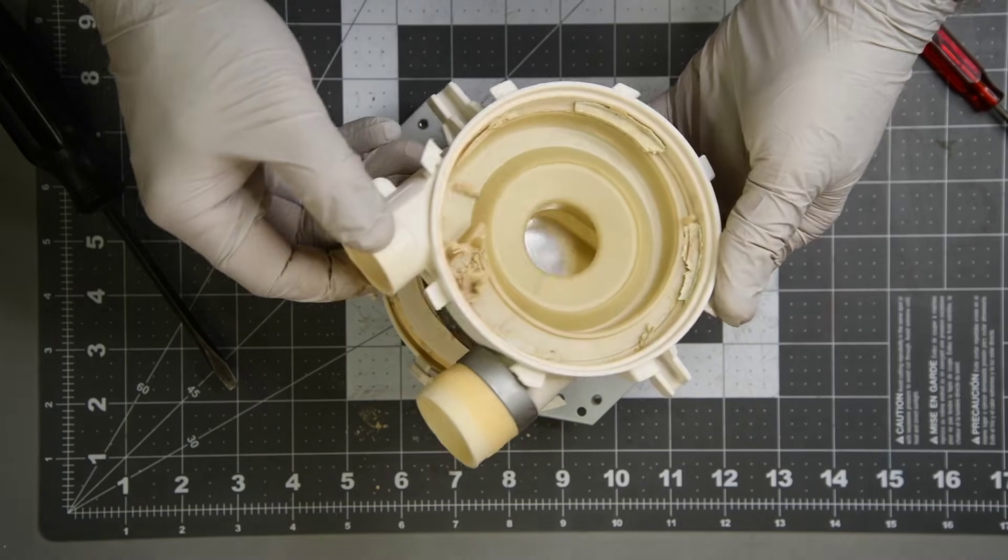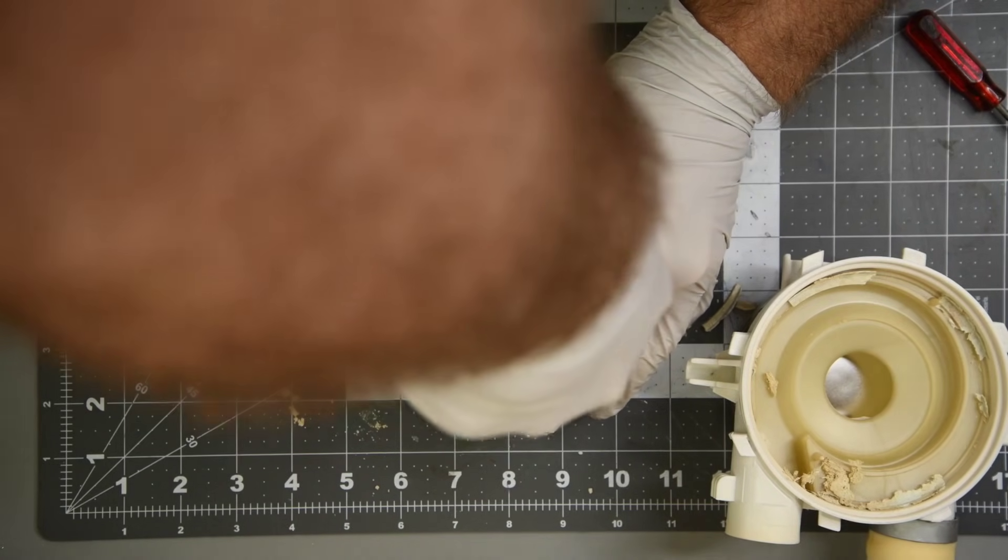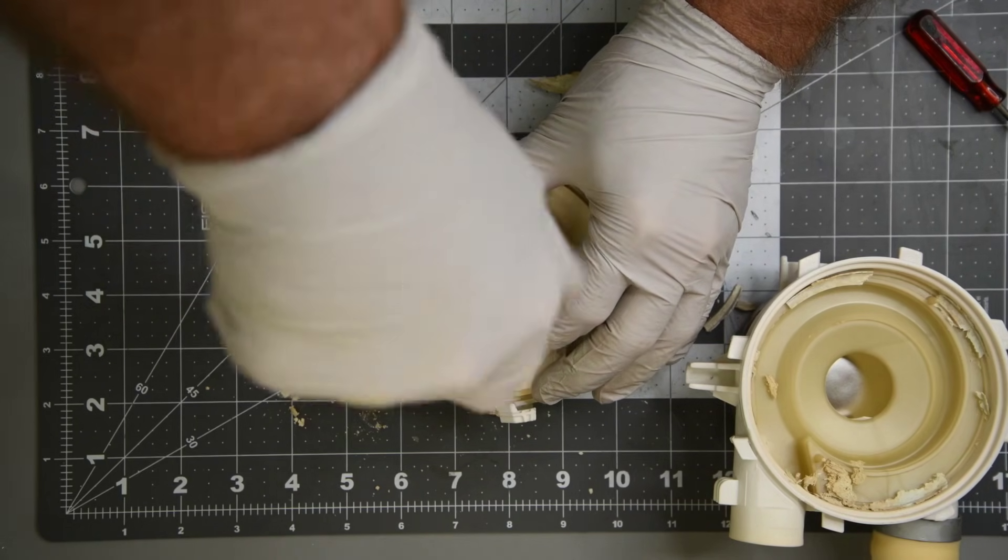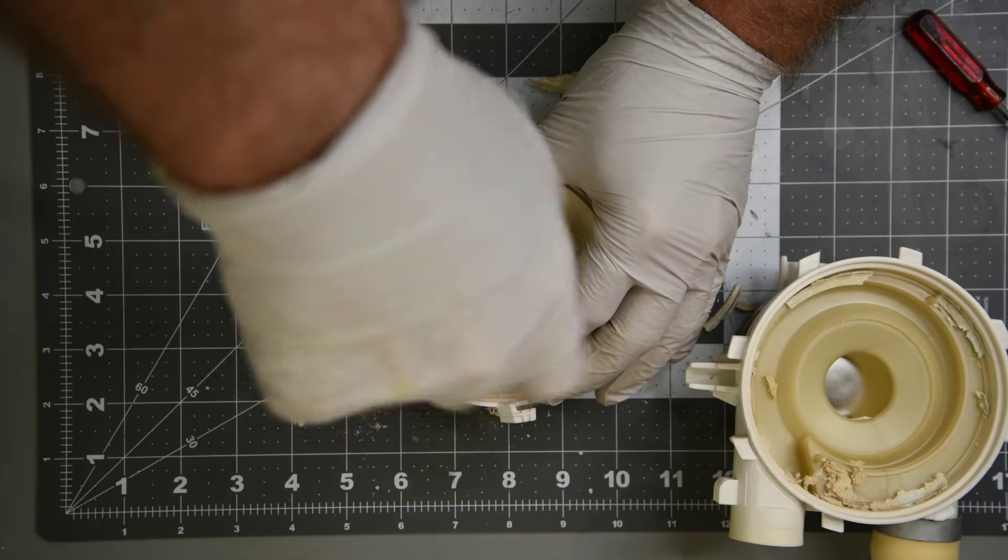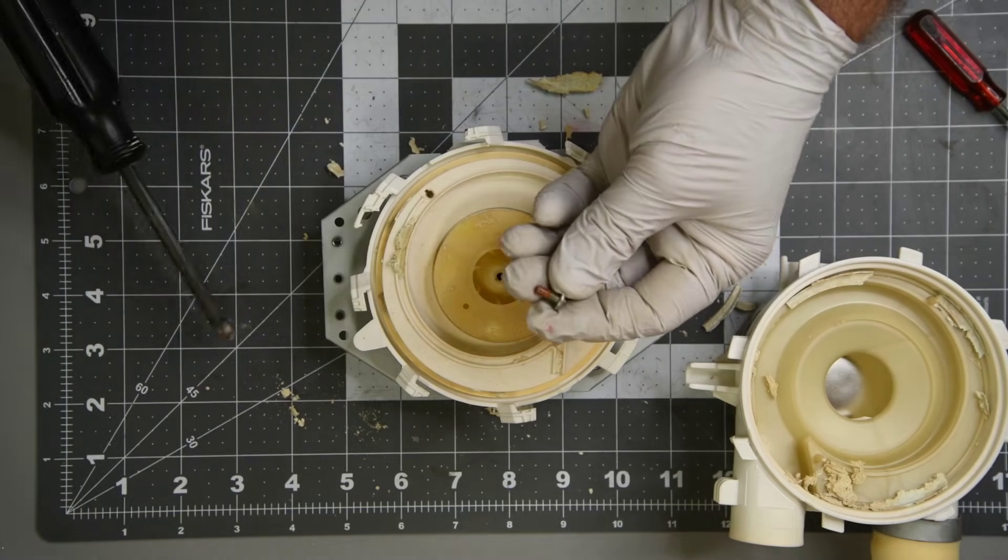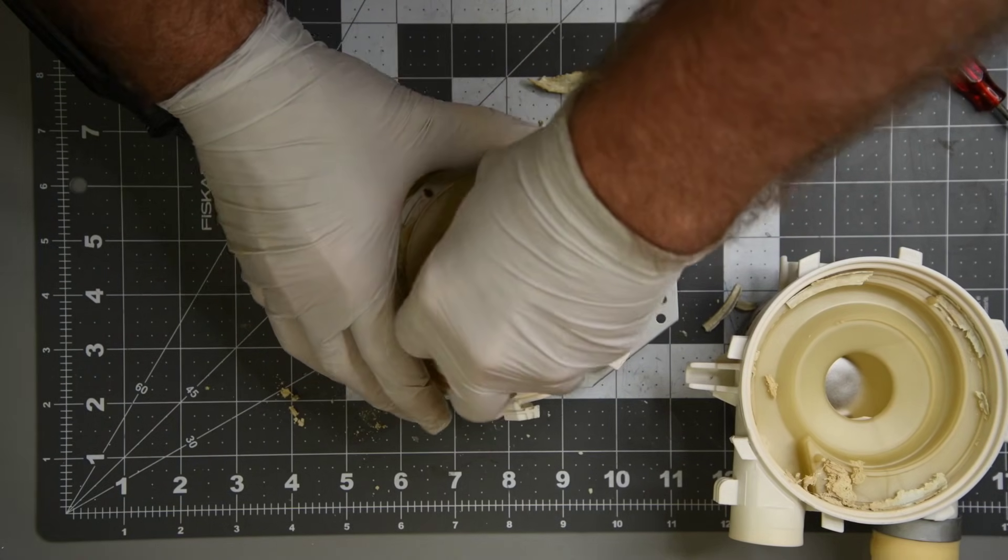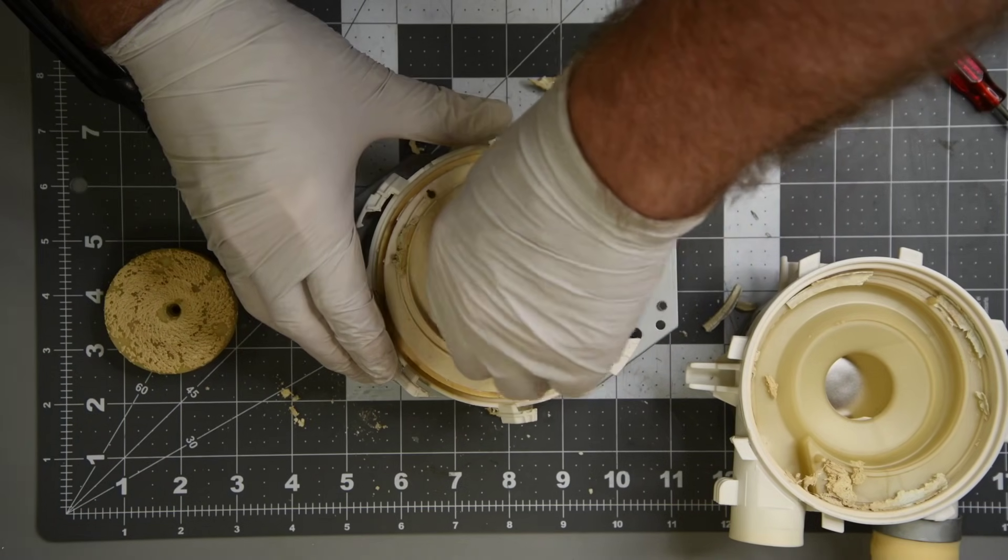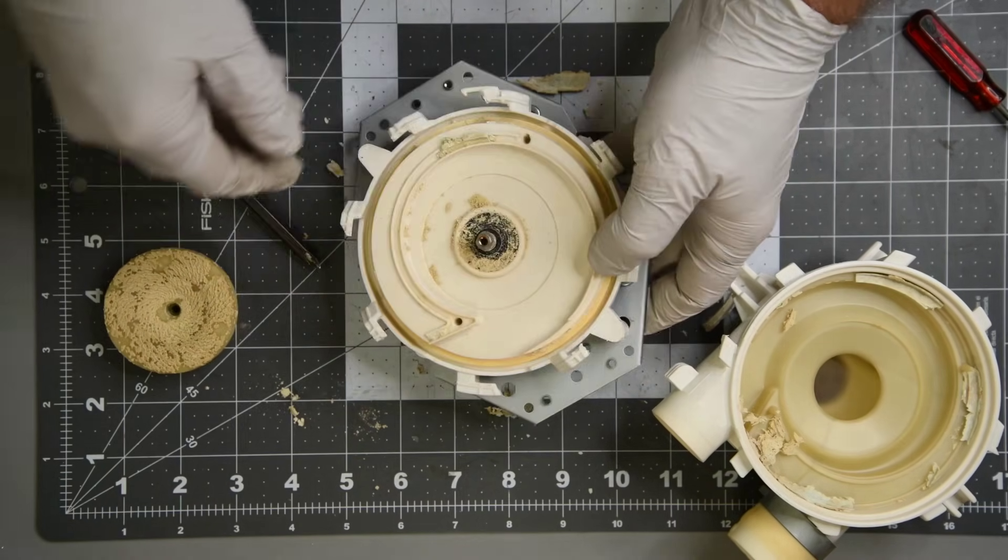Not a lot of mineral buildup, considering six years of running on well water. Alright, a screw holding the impeller on. Oh, left-hand threads. That makes sense. There is definitely a bad bearing. That feels horrible.